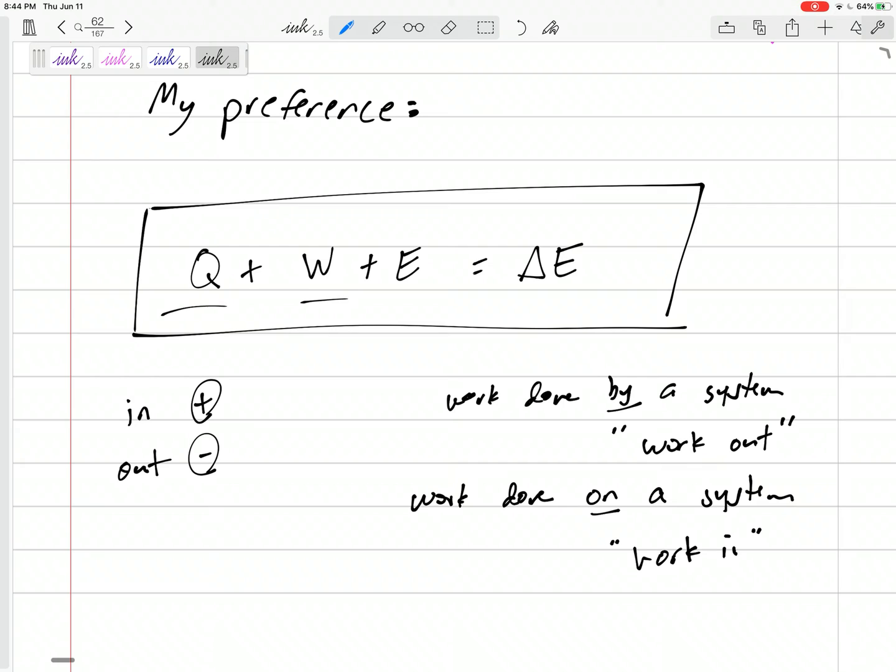All right, so we're going to keep track of: is there any heat going in or out? If heat is going in, I'll put that as positive Q on the left-hand side of my equation. If we're losing heat, I'm going to put that as negative Q. How about work? If we're putting work to the system, then that's work in. But if the system is giving us work, if the system is doing work, that's work out.